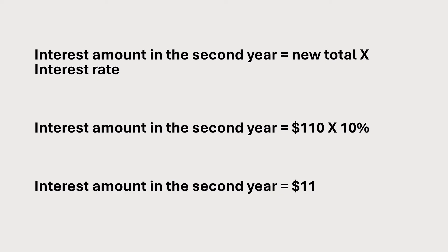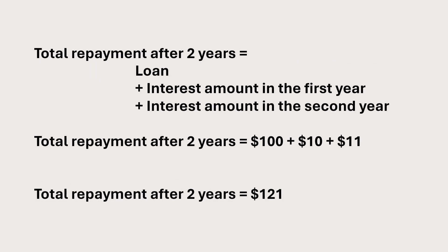The interest for the second year is $11, calculated as $110 times 10%. By the end of two years, John owes $121, which is calculated as the $100 loan plus $10 interest in the first year plus $11 interest in the second year.